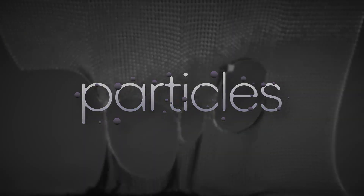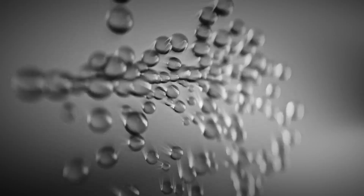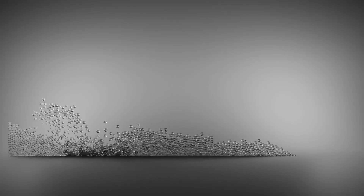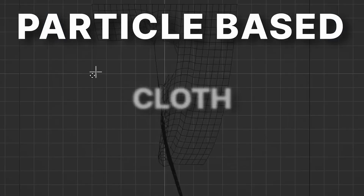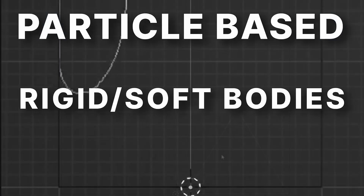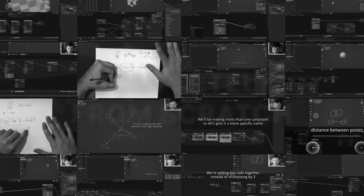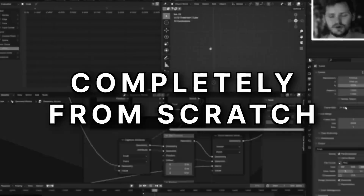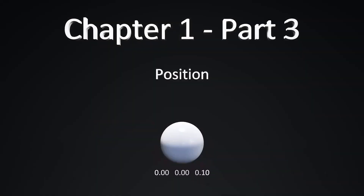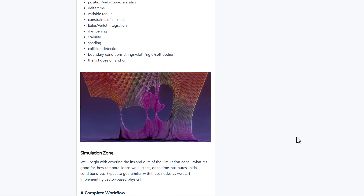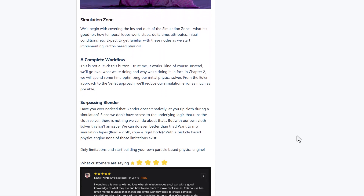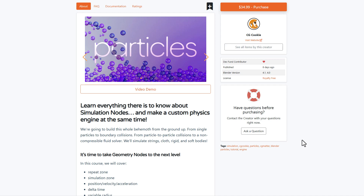The folks at CGCookie have just recently announced three different tutorials. These tutorials are in line with some of the cool things that artists are looking at creating. The first one has to do with particles — an introduction to simulation nodes in Blender. If you're thinking about getting started with that and would like to understand how simulation works in Blender, this course goes from single particle creation to boundary creations using geometry nodes.